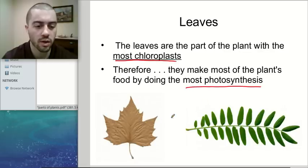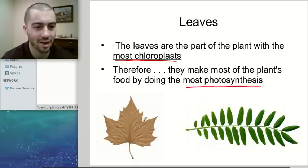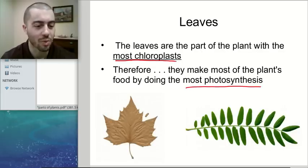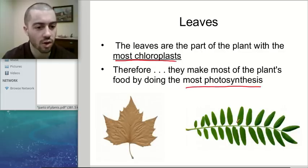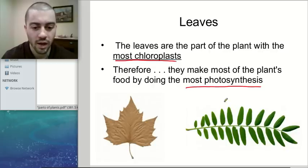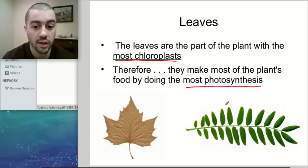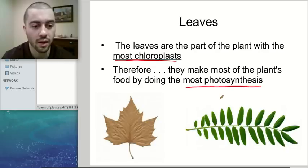We've all seen different kinds of leaves before. In elementary school maybe we looked at different types — you can have a maple-looking leaf or some kind of thinner, smaller leaves. Leaves can come in any shape, size, or color really. The key is the leaves have the most chloroplasts, so they're really the key components for photosynthesis in a plant.